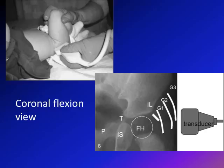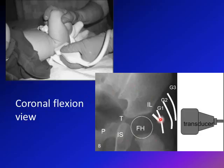Ultrasound is very important for detecting DDH. The ossific center of the femur appears between four and six months, so early x-rays are unreliable — the femoral head is still cartilage. Therefore, in the first few months we use ultrasound. The most-used view is the coronal flexion view: the child's hip and knee are flexed and coronal pictures are obtained, similar to an AP x-ray of the hip.